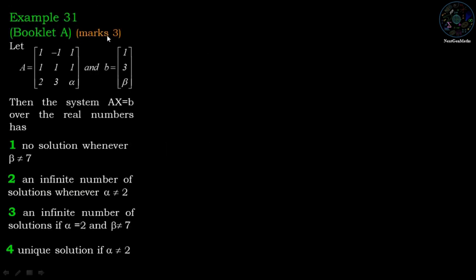Example number 31 from booklet A, which is of 3 marks. Let A equal to the matrix [1, -1, 1; 1, 1, 1; 2, 3, alpha] and vector B equal to [1, 3, beta]. The system Ax = B over the real numbers has: option 1 - no solution whenever beta not equal to 7; option 2 - infinitely many solutions whenever alpha not equal to 2; option 3 - infinitely many solutions if alpha equal to 2 and beta not equal to 7; option 4 - unique solution if alpha not equal to 2.